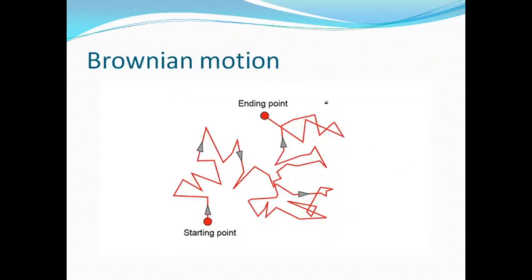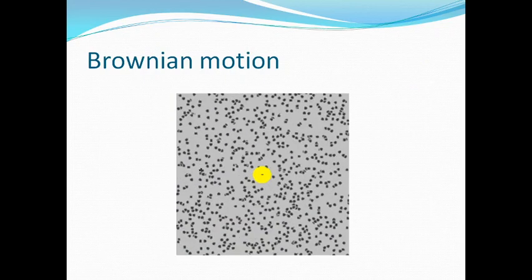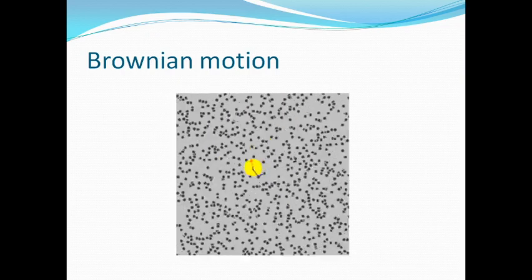Albert Einstein also contributed greatly in explaining the phenomenon of Brownian motion. Brownian motion is the random zigzag motion of tiny particles suspended in still water. Some pollen grains and dust particles in air also show Brownian motion. As indicated in the figure, a lot of Brownian particles can move in this random way, and if you focus on one particular particle, it might be choosing a very random path.